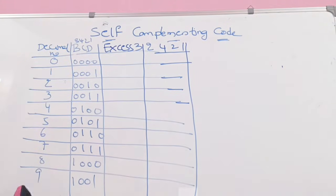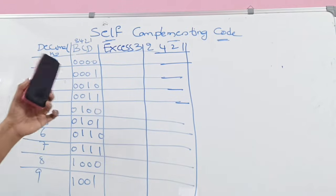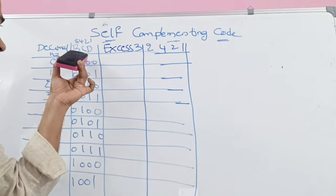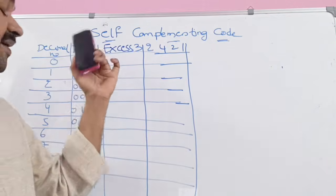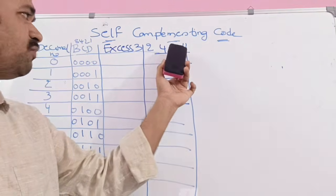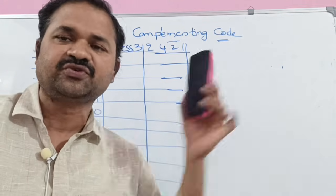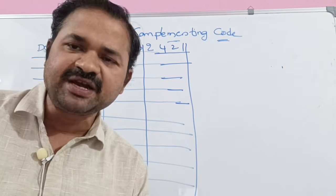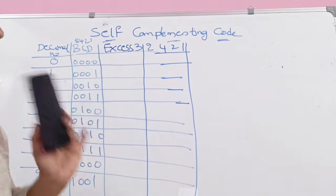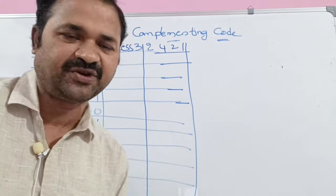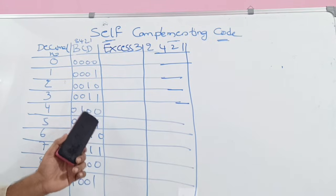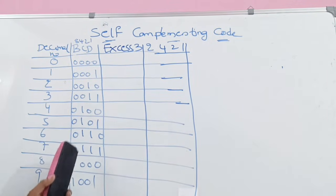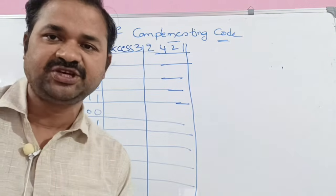Here we have 10 decimal numbers from 0 to 9. First, we have represented those decimal numbers in BCD notation. We have two types of BCD notation; mainly we use 8421 notation and we also have 2421 notation. The 2421 notation is also BCD notation, but the most commonly used BCD notation is 8421. This is simply binary notation: 0 means 0000, 1 means 0001, 2 means 0010, 3 means 0011, 4 means 0100, 5 means 0101, 6 means 0110, 7 means 0111, 8 means 1000, 9 means 1001.